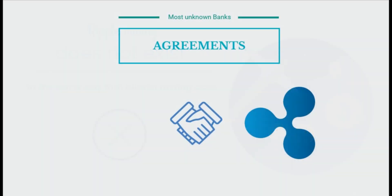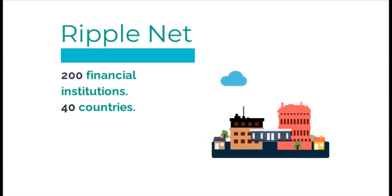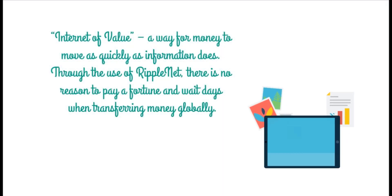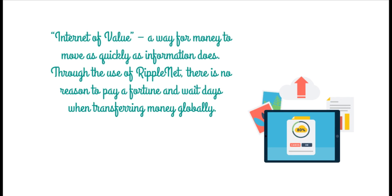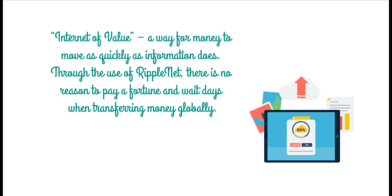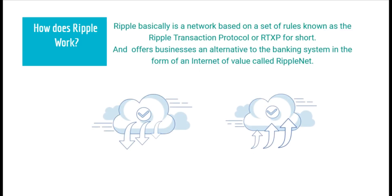Looking at real-world applications: while Bitcoin is seeing increasing use by individuals and organizations as a virtual currency, the Ripple payment system is more popular among banks. Most major banks have already made agreements with Ripple. RippleNet is a consortium of more than 200 financial institutions based in more than 40 countries, allowing for easy facilitation of cross-border payments. Ripple Labs, the creators of RippleNet, aim to create the "internet of value" — a way for money to move as quickly as information does. Unlike most cryptocurrencies that focus on the individual, Ripple Labs aims to serve banks and payment providers, allowing them to lower transaction costs and expedite settlements.